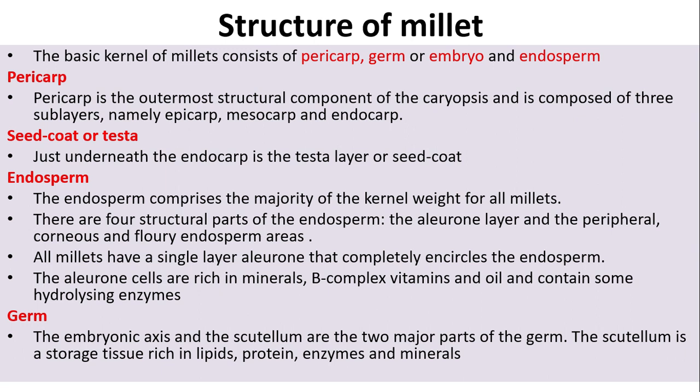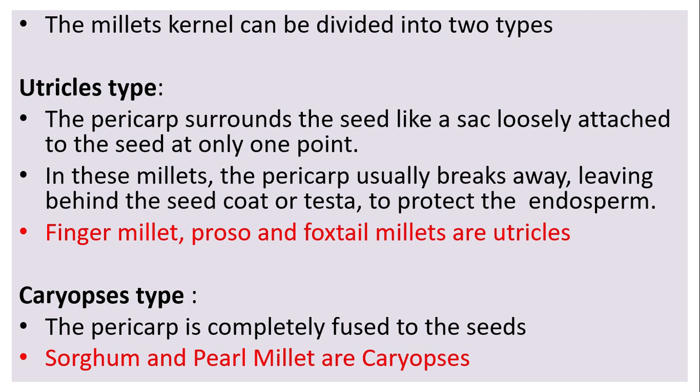Aleurone cells are rich in minerals, B complex vitamins, oil, and also contain some hydrolyzing enzymes. The germ has two major parts: the embryonic axis and the scutellum. The scutellum is a storage tissue which is rich in lipids, protein, enzymes, and minerals.